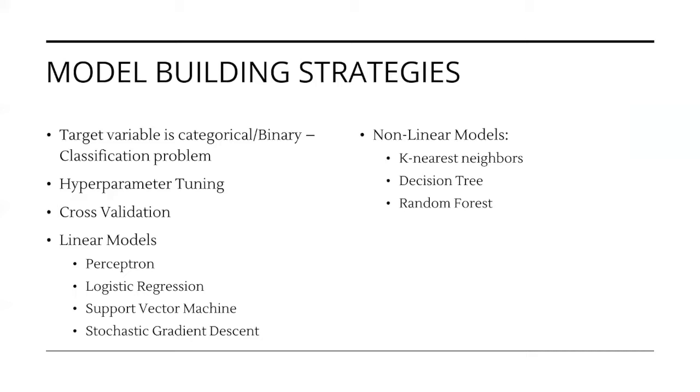For the linear models, we will consider the perceptron, logistic regression, support vector machine, and stochastic gradient descent. For the non-linear models, we will consider the k-nearest neighbors, decision trees, and random forest. Each model will be tuned using cross-validation to vary the hyperparameters and find the optimal model.